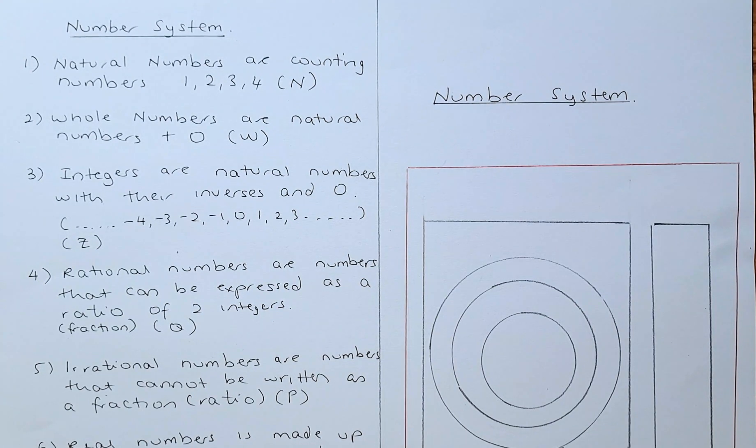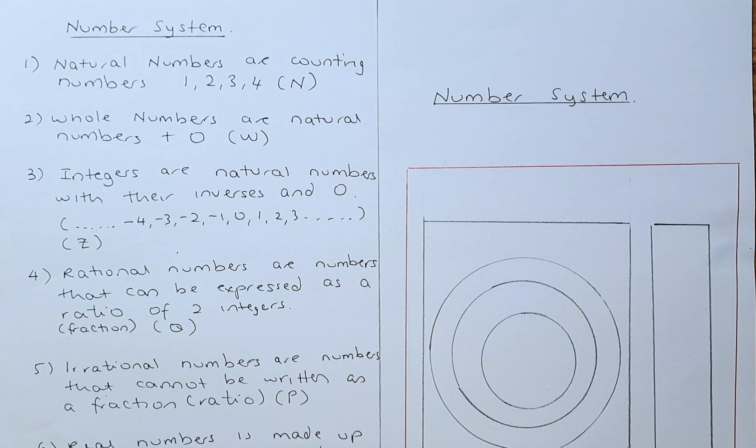So let's start with natural numbers. What are natural numbers? Natural numbers are just counting numbers like 1, 2, 3, 4, 5 and all the way to infinity.